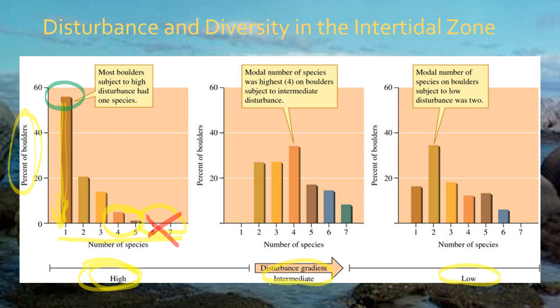At low disturbance (large boulders), very few boulders had six or seven species and none had seven, with most boulders peaking at two species. On the intermediate-sized boulders, which were sometimes rolling and sometimes not, none had only one species. The modal number — the highest percentage of boulders — had four species on them, confirming that intermediate disturbance produced the most species.